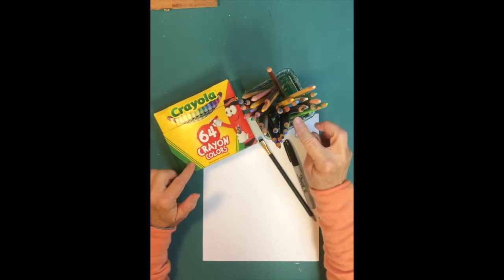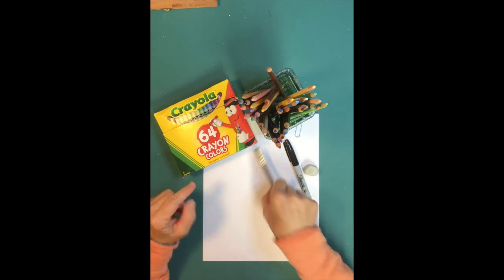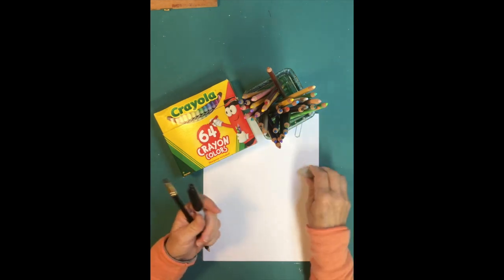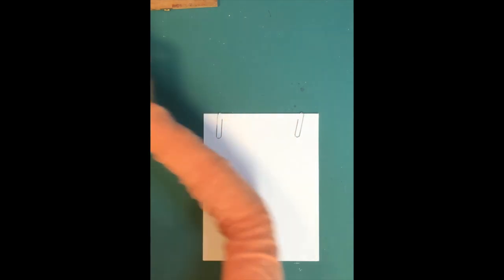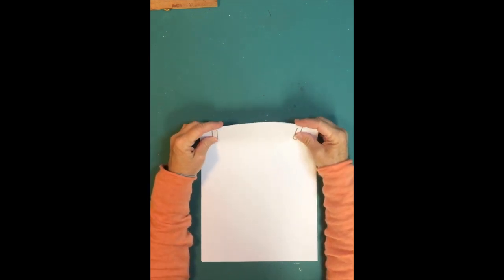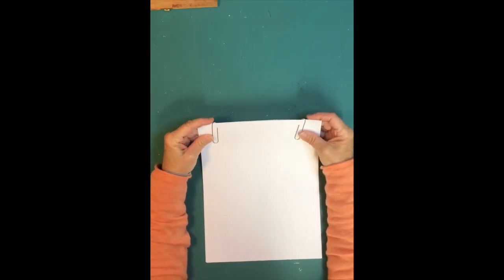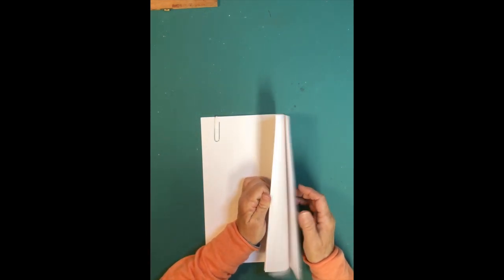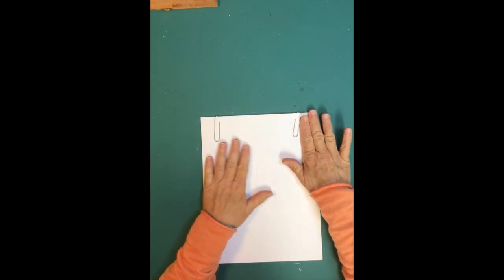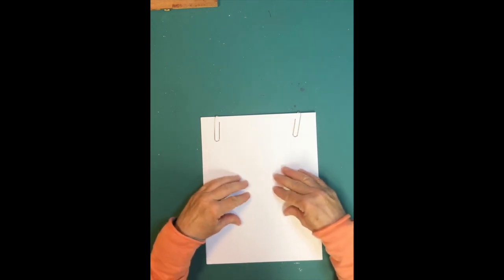You can either use crayons or colored pencils, a pencil, a black marker, and an eraser. I want to show you a little helpful hint here. I've taken a couple pieces of paper and I've paper clipped them together, and the paper clips are really just to keep the paper together.